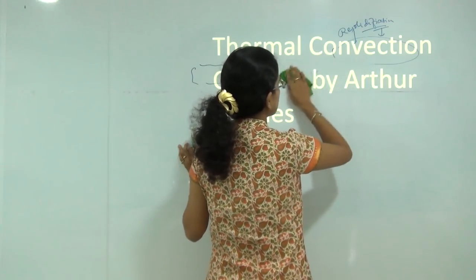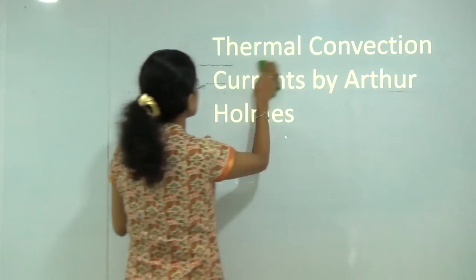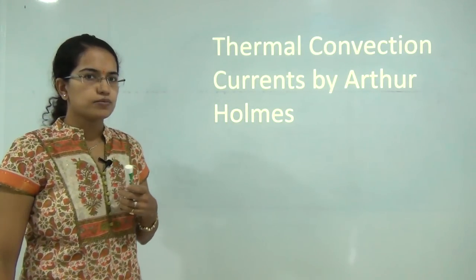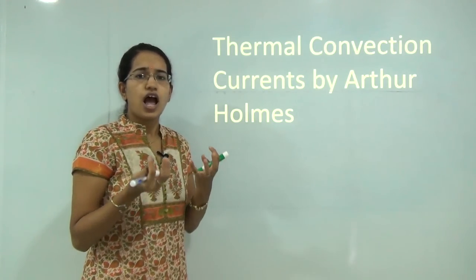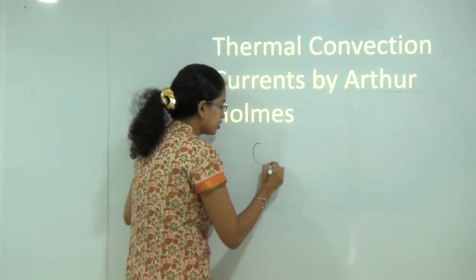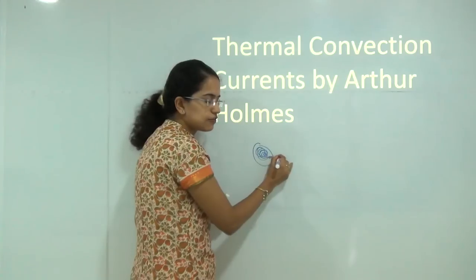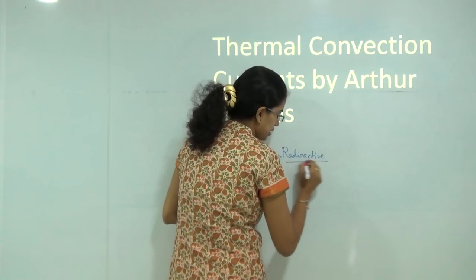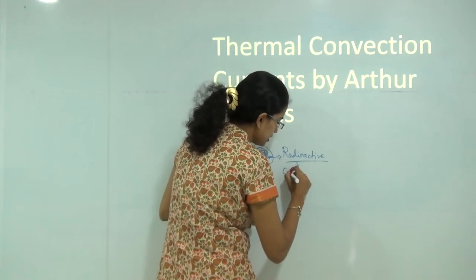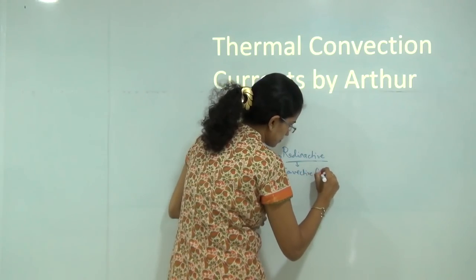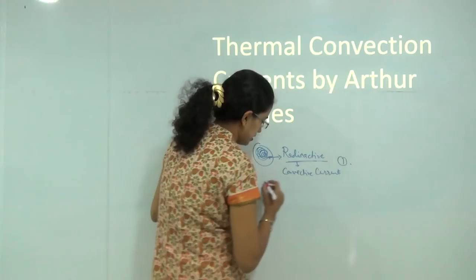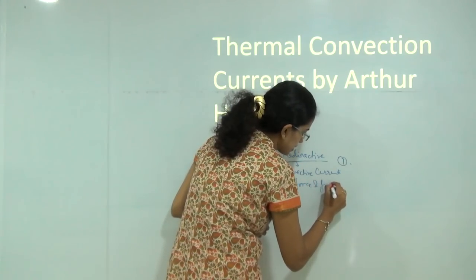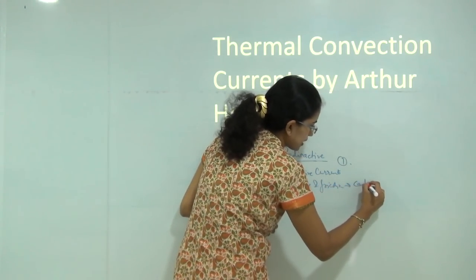As a result of these criticisms, the next major contributor to mountain building theory was Holmes. Holmes talked about thermal convection currents. According to Holmes, the interior of the earth has a huge amount of energy, and that heat within the earth's interior is released through radioactivity. This radioactivity also leads to convective currents. He also talked about tidal force and friction which are responsible for continental drifting.